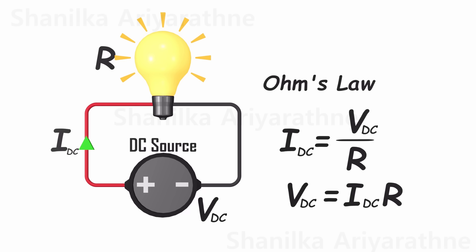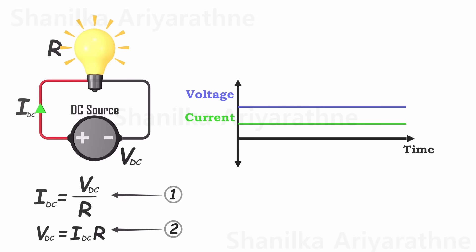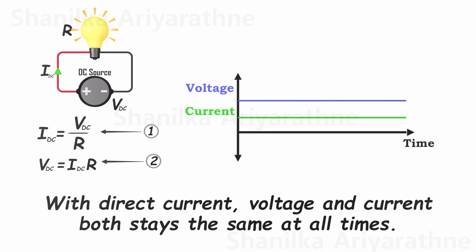By rearranging this equation, we can compute the voltage equals current times resistance. Let's assign numbers to these two equations for reference. If we create a graph depicting both the voltage and current for the bulb, it will result in a straight line. You see, with direct current, both parameters remain constant throughout.